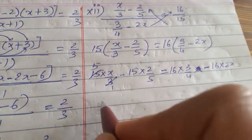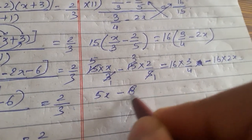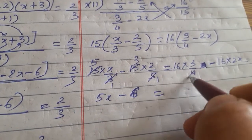3 1s are 3, 3 5s are 15, to ye ho gaya 5x. 5 1s are 5, 5 3s are 15, to ye ho gaya 6 is equal to.